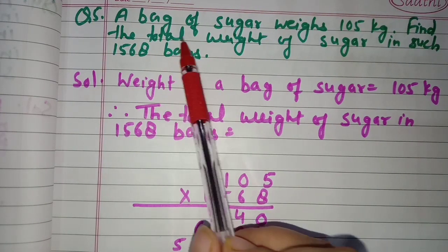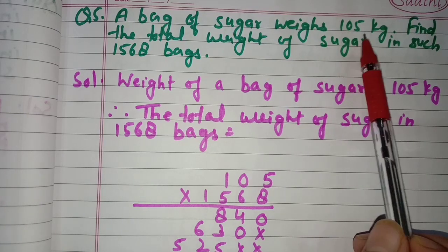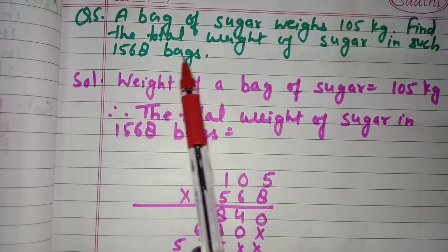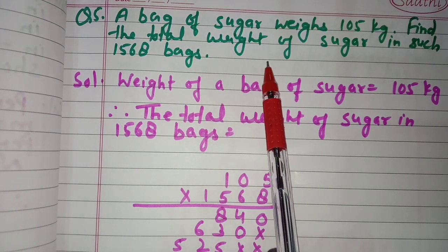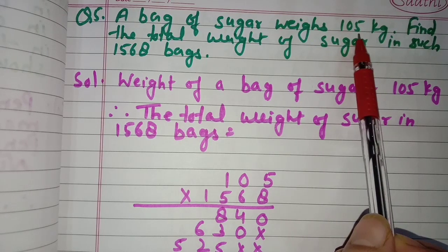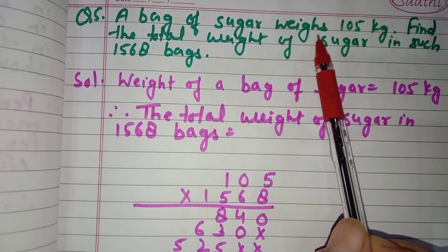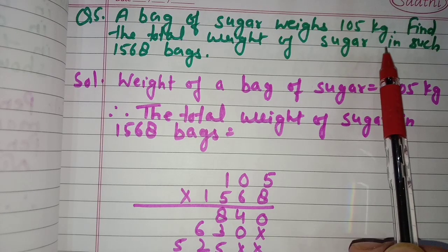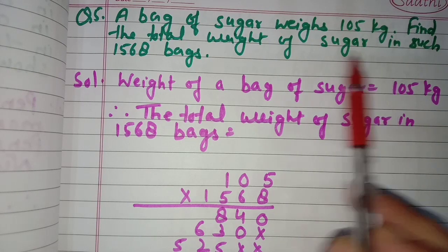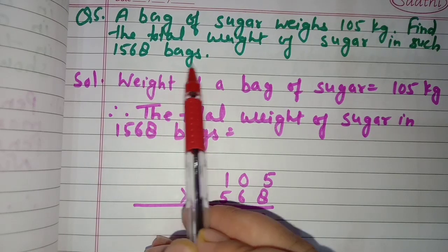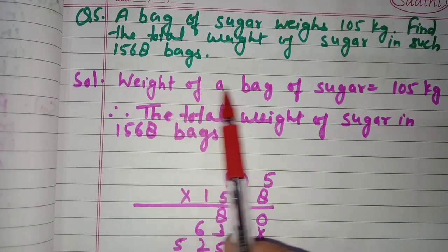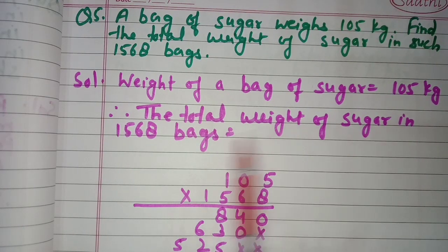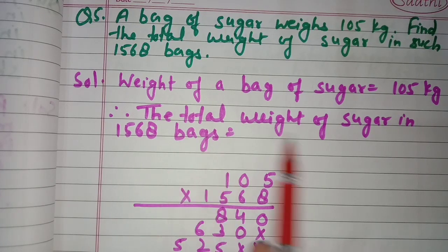Question number five: a bag of sugar weighs 105 kg. Find the total weight of sugar in 1568 such bags. The weight of one bag of sugar is given, and we need to find the total weight in 1568 bags. Weight of one bag: 105 kg.